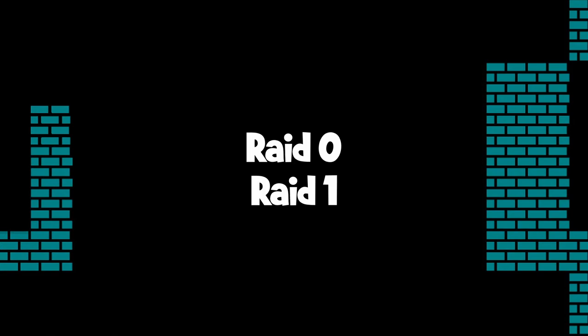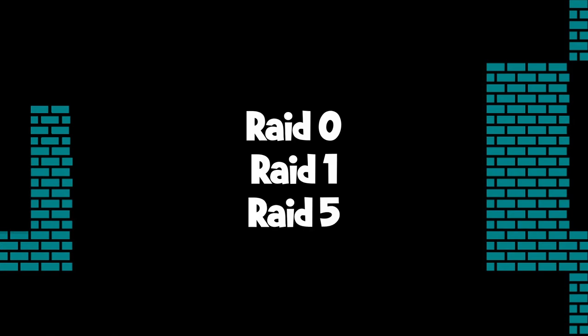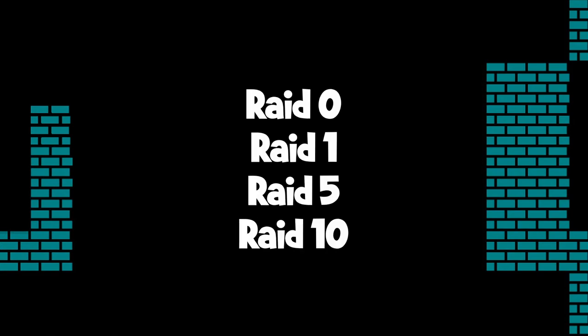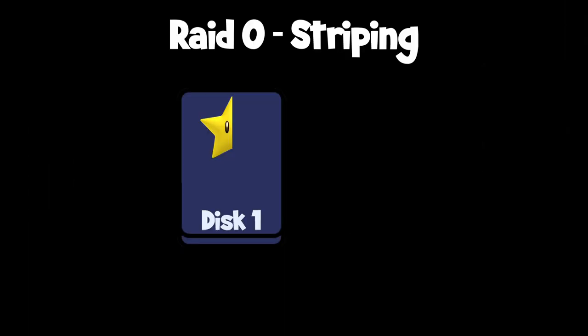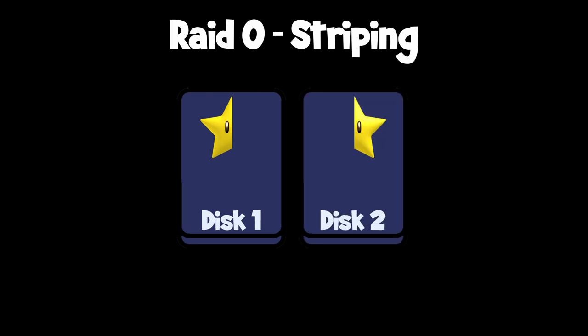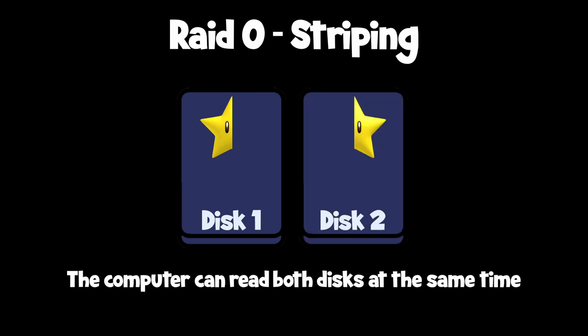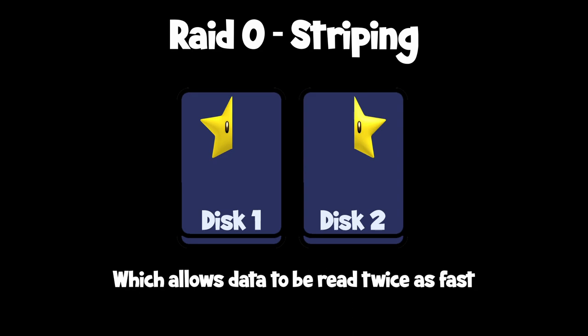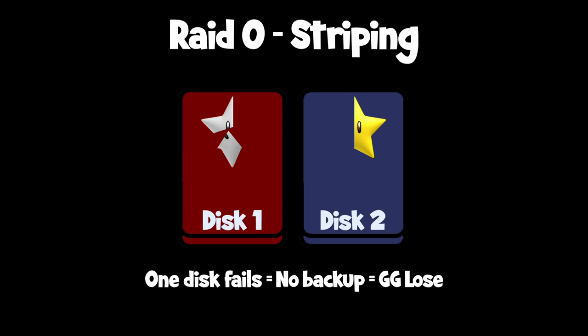Zero, one, five, and ten. Ten is also sometimes called one plus zero since it's a combination of the two. RAID zero, which is striping. This configuration is used to improve read and write performance by splitting the data into stripes and spreading them across multiple disks. RAID zero has no redundancy, so if one disk fails, all data on all disks will be lost.